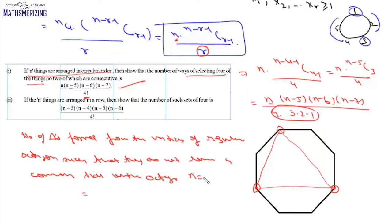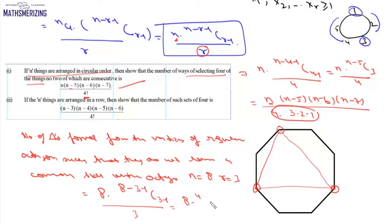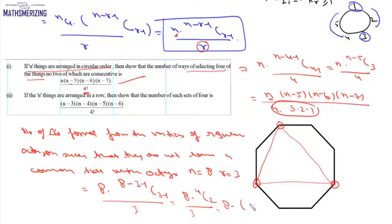Using the formula n × (n-r-1)C(r-1) / r with n = 8 and r = 3: 8 × (8 - 3 - 1)C(3-1) / 3 = 8 × 4C2 / 3 = 8 × 6 / 3 = 16. So the total number of triangles that can be formed from the vertices of an octagon such that they do not have a side in common with the octagon is 16.